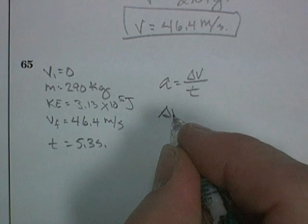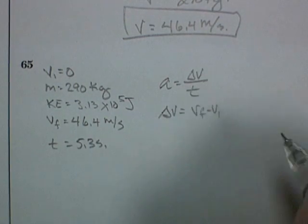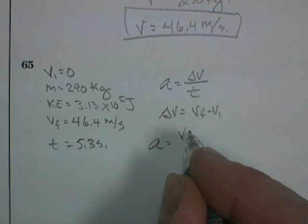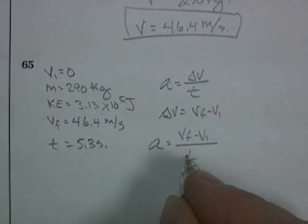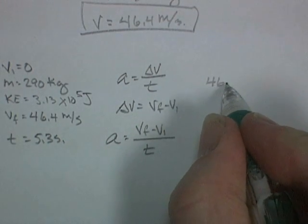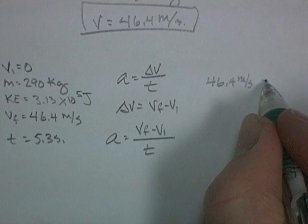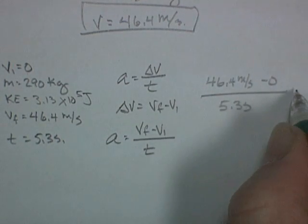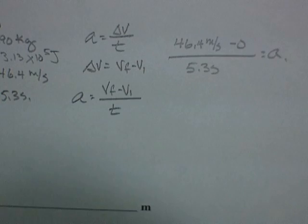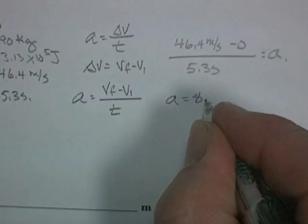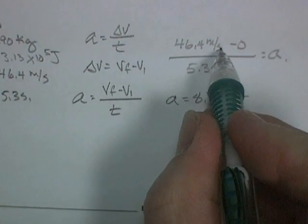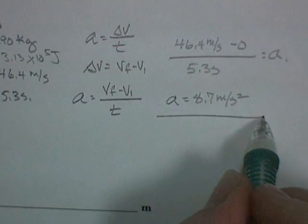The formula for acceleration is change in velocity over time. So we write that acceleration is change in velocity over time. Change in velocity is velocity final minus velocity initial. Change in anything is what you got minus what you started with. So we can write acceleration is equal to velocity final minus velocity initial all over time. And we plug in with our units of 46.4 meters per second minus 0 divided by 5.3 seconds will be equal to our acceleration. One more time with the calculator. And I come up with an acceleration of 8.7 meters per second per second, or meters per second squared.